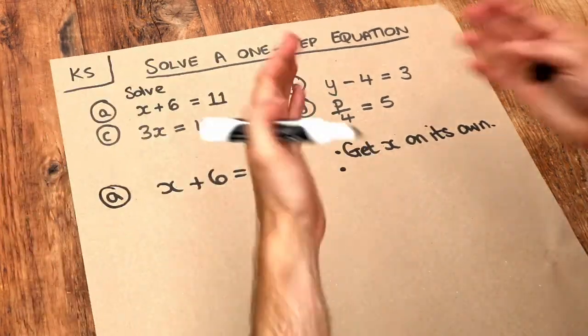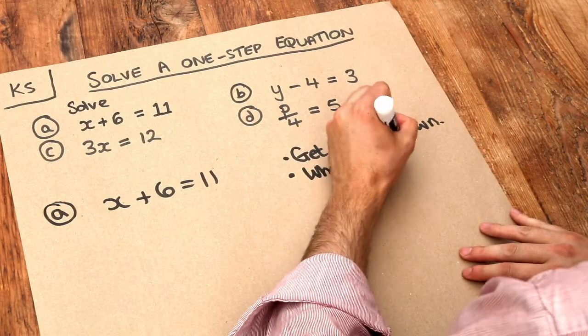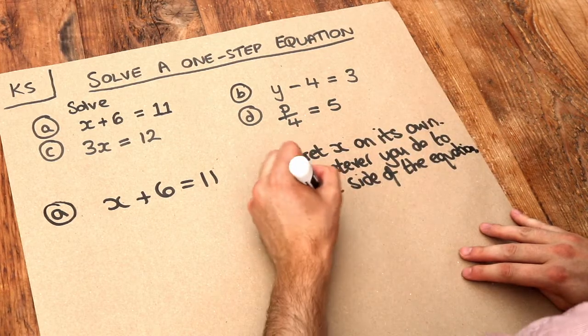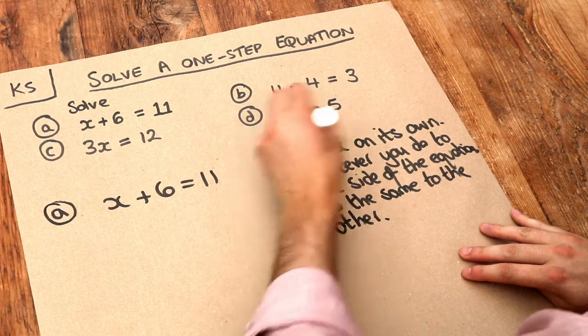The way we do this is to think about balancing the equation. Whatever you do to one side of the equation, you must do the same to the other. These are the key points here.